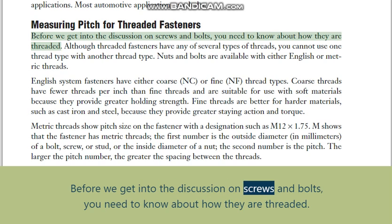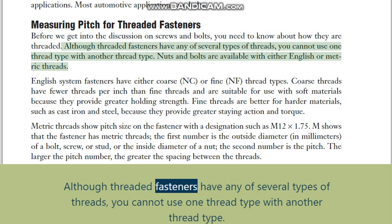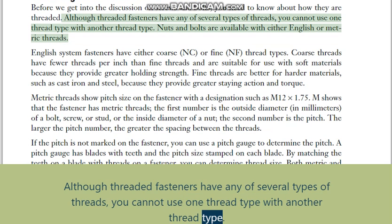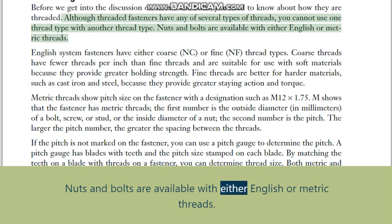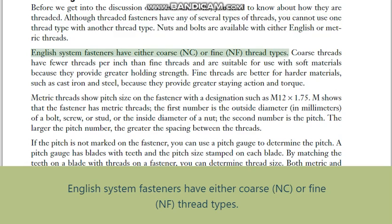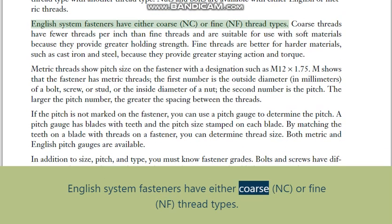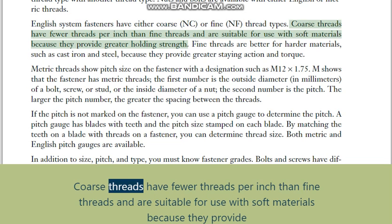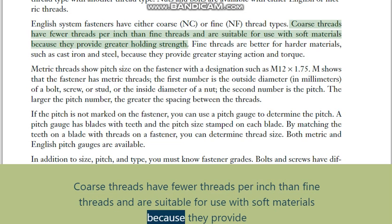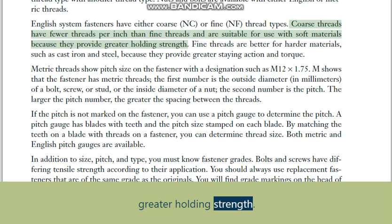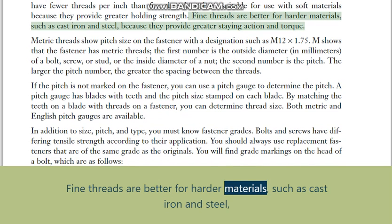Measuring pitch for threaded fasteners: although threaded fasteners have any of several types of threads, you cannot use one thread type with another. Nuts and bolts are available with either English or metric threads. English system fasteners have either coarse (NC) or fine (NF) thread types. Coarse threads have fewer threads per inch than fine threads and are suitable for use with soft materials because they provide greater holding strength. Fine threads are better for harder materials such as cast iron and steel because they provide greater staying action and torque.